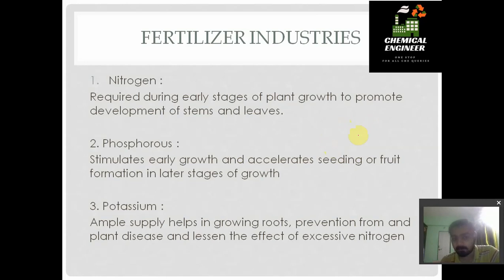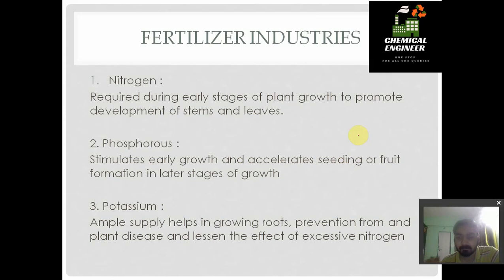Phosphorus stimulates early growth and accelerates seeding, so the flowering and seeding in the plant is accelerated by phosphorus fertilizers. Phosphorus is obtained in various forms that we will study in subsequent videos. Phosphorus is generally used to accelerate seeding or fruit formation in the later stage of plant growth.